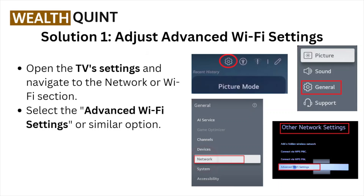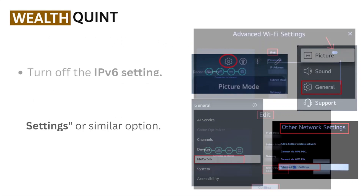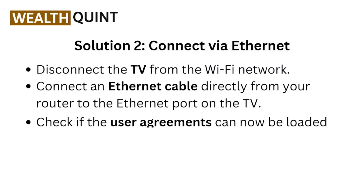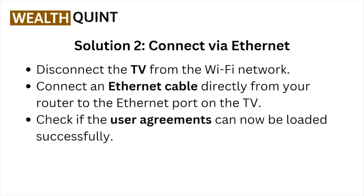Select the advanced Wi-Fi settings or similar option and turn off the IPv6 settings. Set the DNS server to 8.8.8.8, save the changes, and exit the settings.